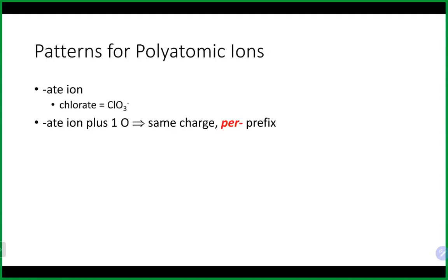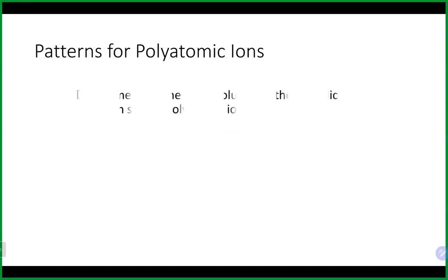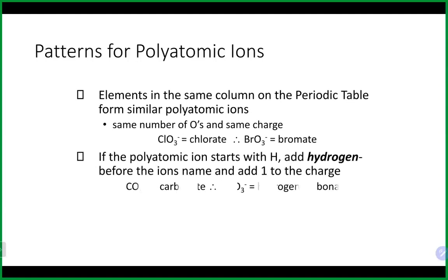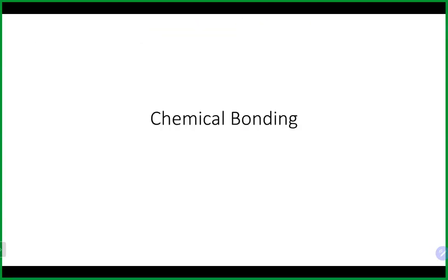That concludes our naming discussion. A summary slide shows the group of four chlorine-based polyatomic ions: perchlorate (most oxygens), chlorate, chlorite, and hypochlorite (fewest oxygens). Also, hydrogen carbonate is sometimes called bicarbonate. Now we switch gears to talk about bonding.